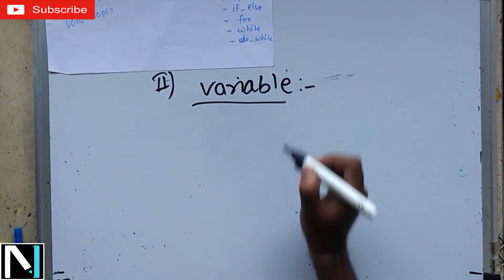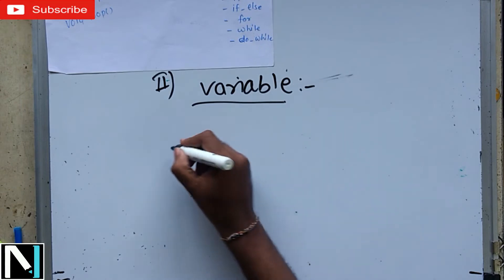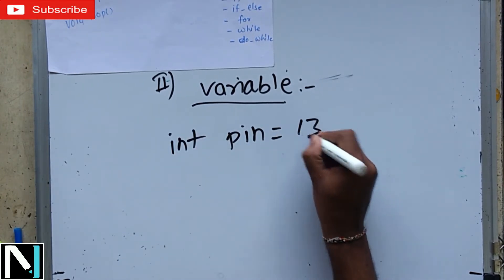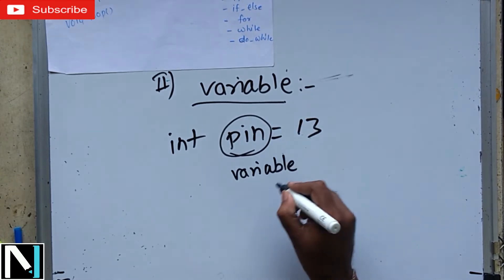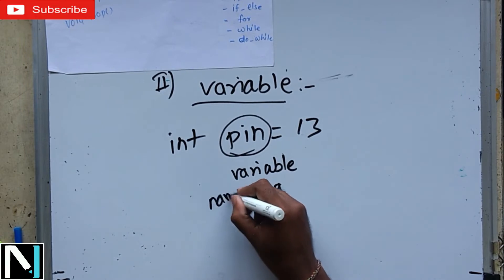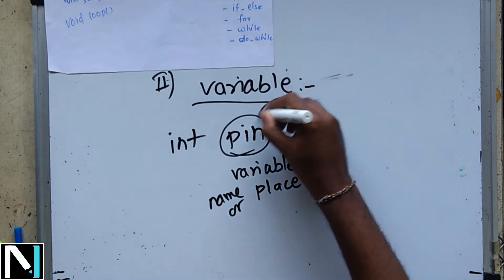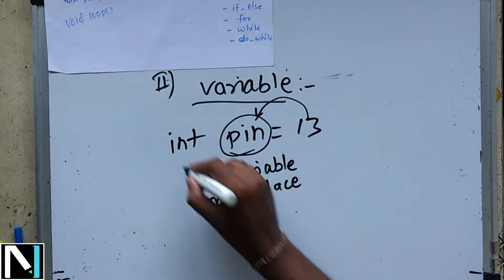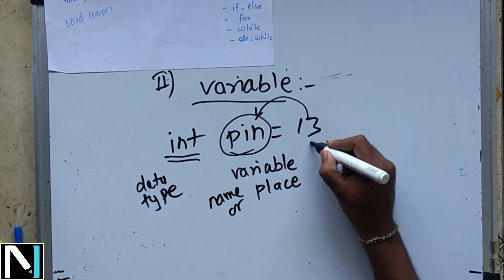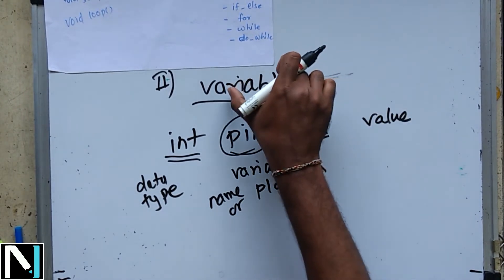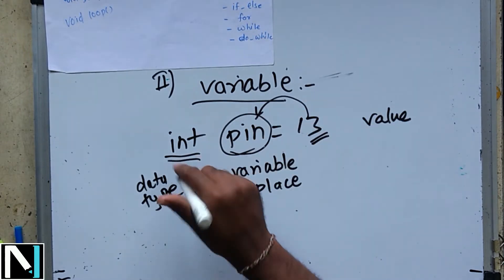The second programming concept is variables. A variable is a place to store a piece of data. It has a name, a value, and a data type. For example: int pin = 13. Here, 'int' is the data type, 'pin' is the variable name or place where data is stored, and '13' is the value. So a variable is a name or place used to store a data value with a certain data type.